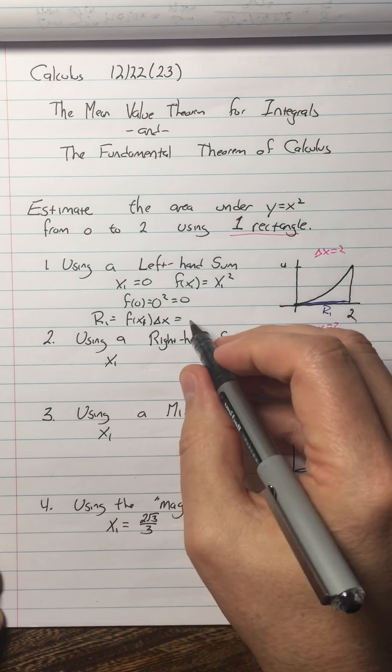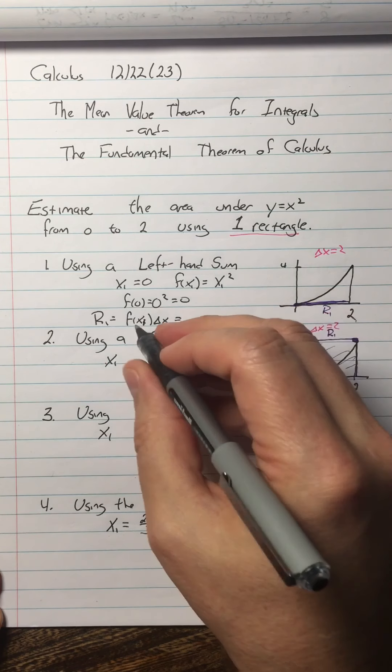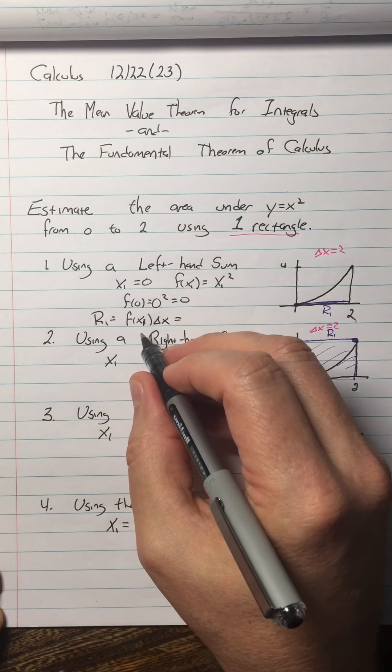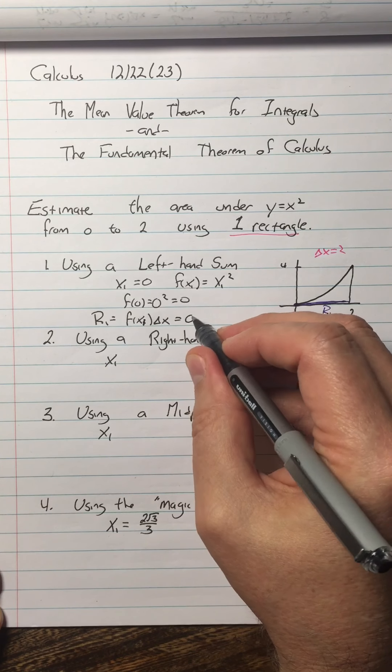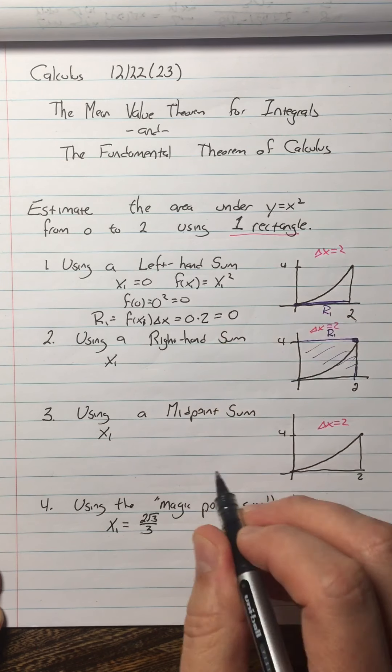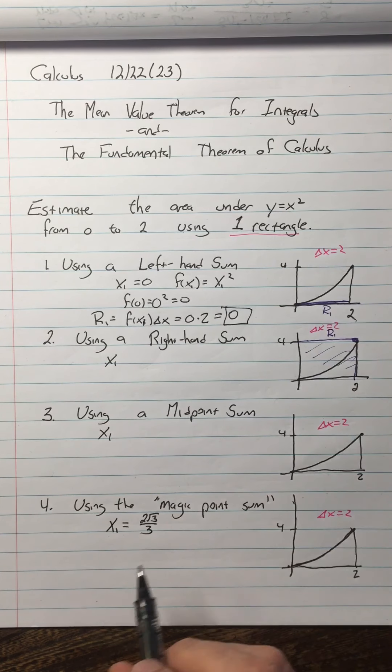So this is, and obviously this rectangle is zero, but look at where the parts come from. Since f of x1 is zero and the delta x is 2, that means it's zero. So that is our left-hand sum estimate.